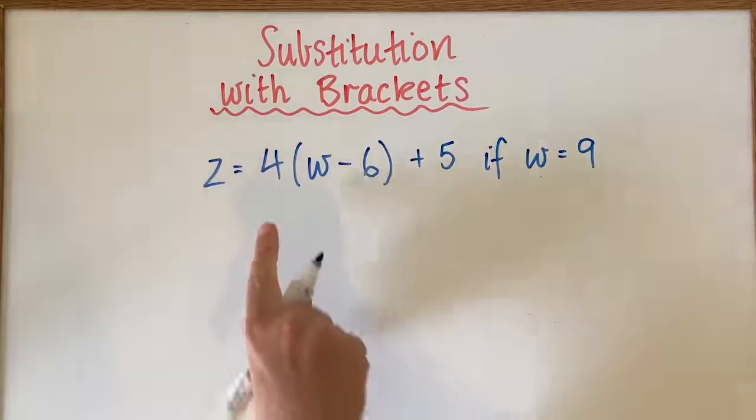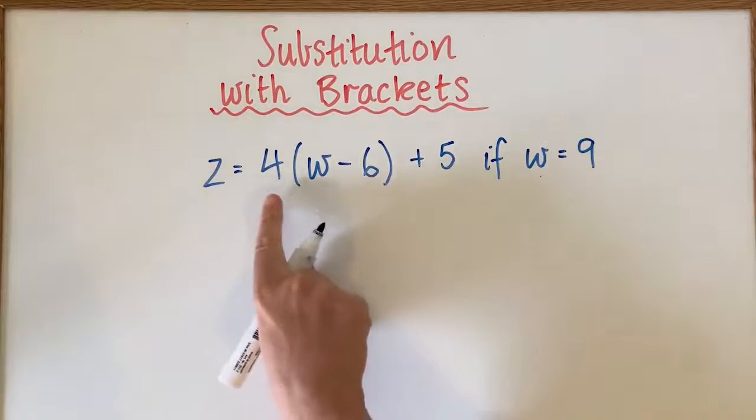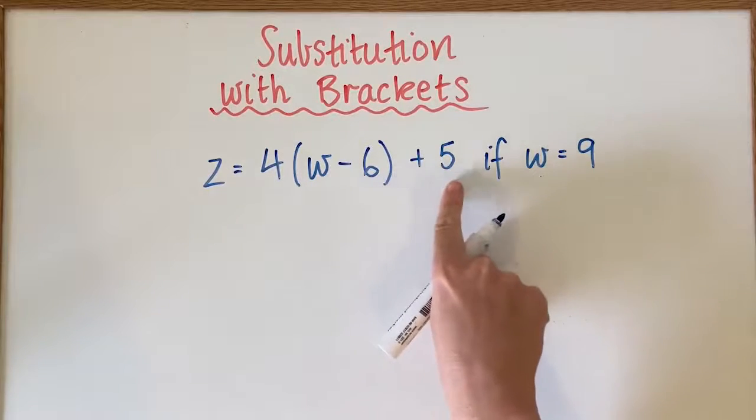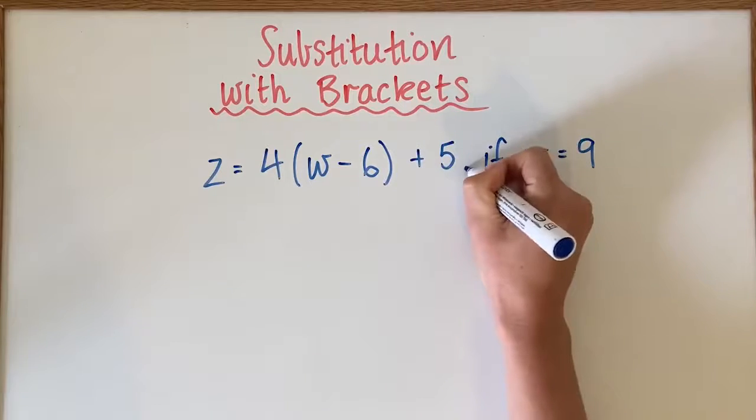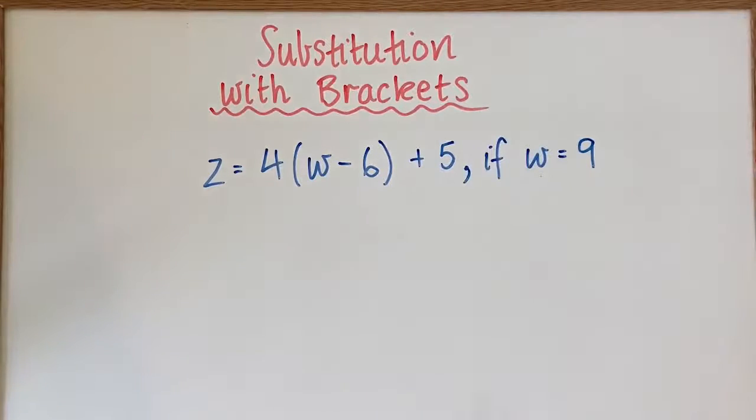Alright, so for this one we've been given z equals 4 bracket w minus 6 close bracket plus 5 on the end if w is equal to 9.